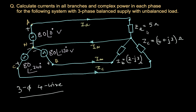Three different values of load impedances are present in three different phases. Even so, the supply is balanced — magnitudes are equal at 80V and phase angles are 0, minus 120, and minus 240 degrees. So Van, Vbn, and Vcn are balanced source voltages. If we consider the neutral point as the ground point at zero volts, then all other line voltages are measured with reference to it, and we assume no resistance or impedance for the neutral line itself.